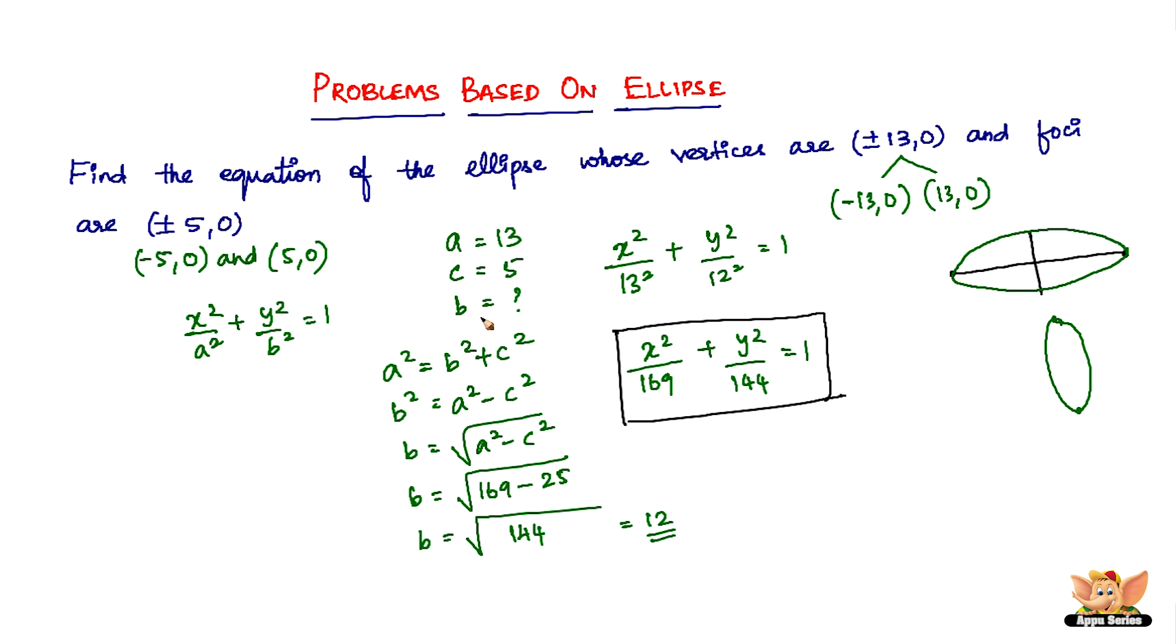Another important thing to remember for an ellipse is this relationship: a² = b² + c², where a is the semi-major axis, b is the semi-minor axis, and c is the distance of the focus from the center of the ellipse. That ends this problem and video. I'll see you in future videos with more problems based on ellipse.